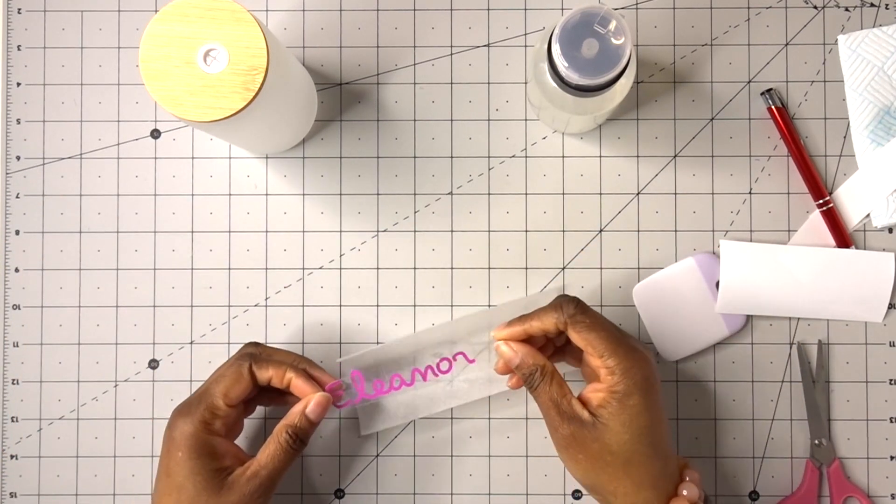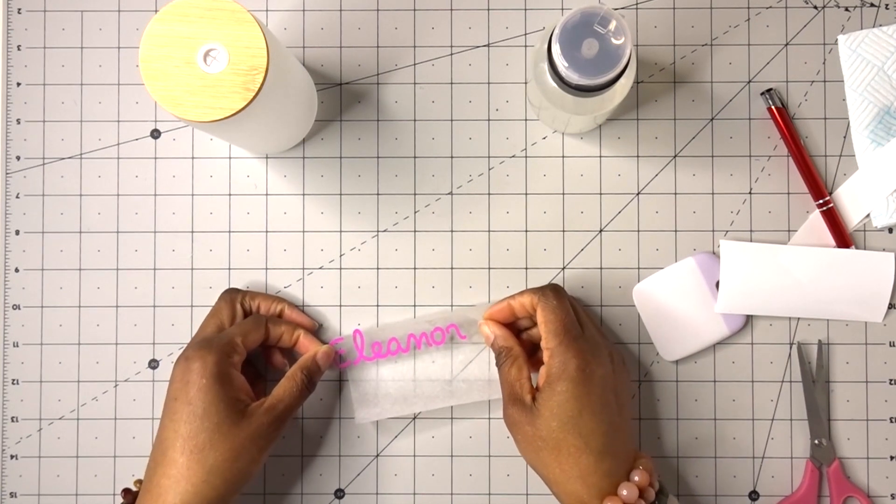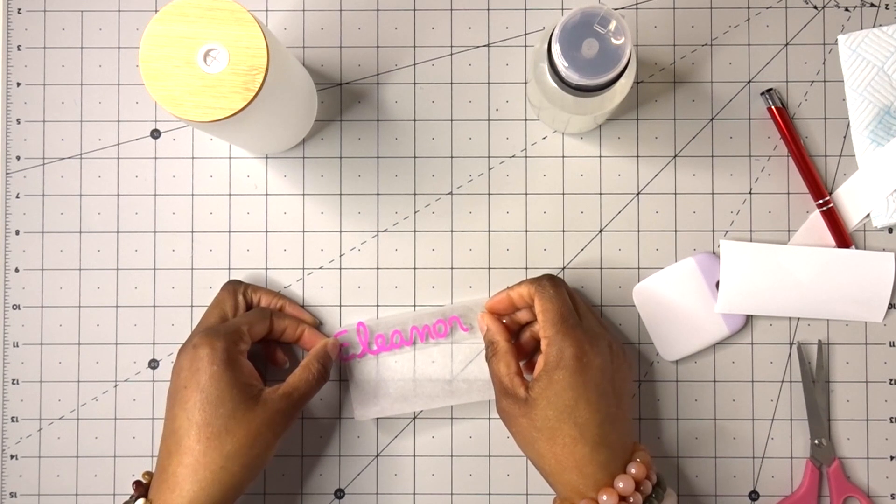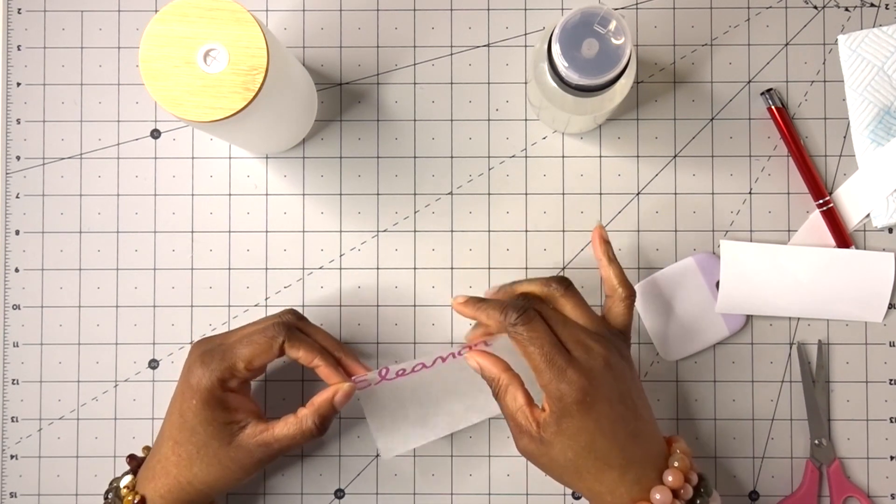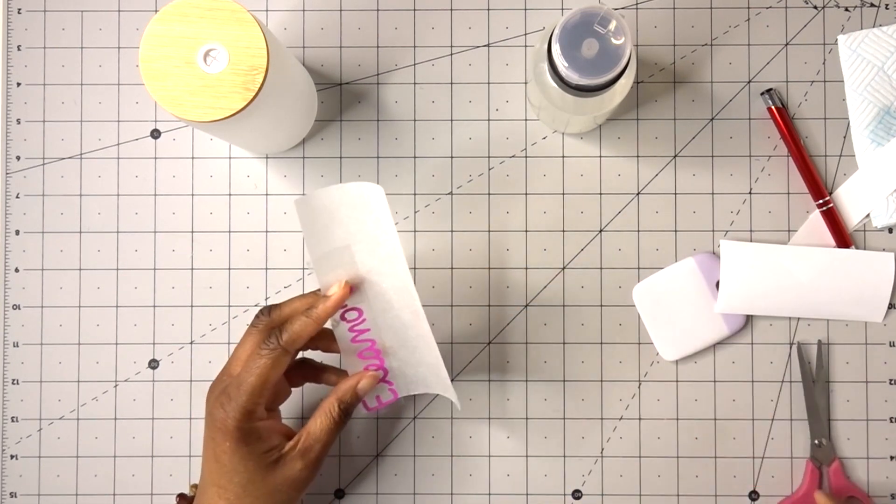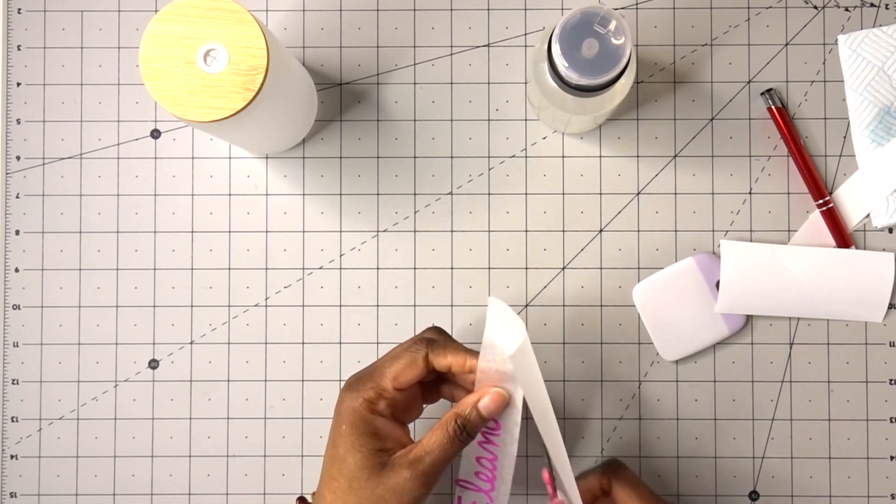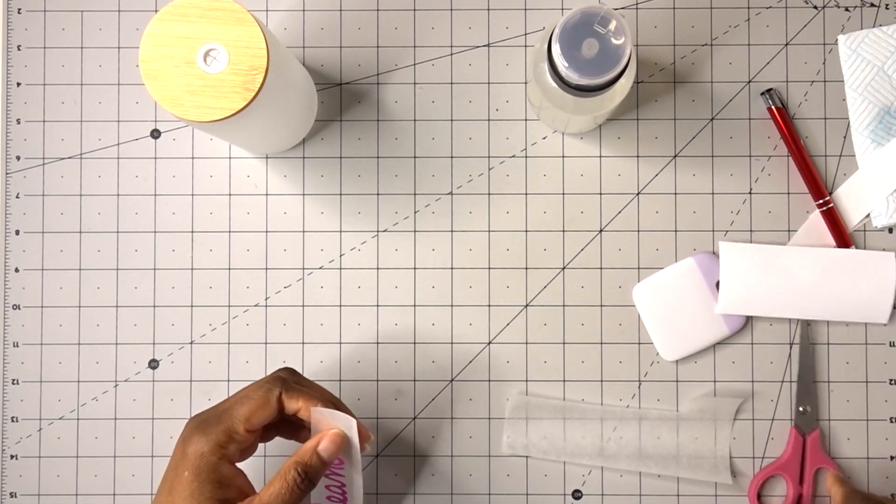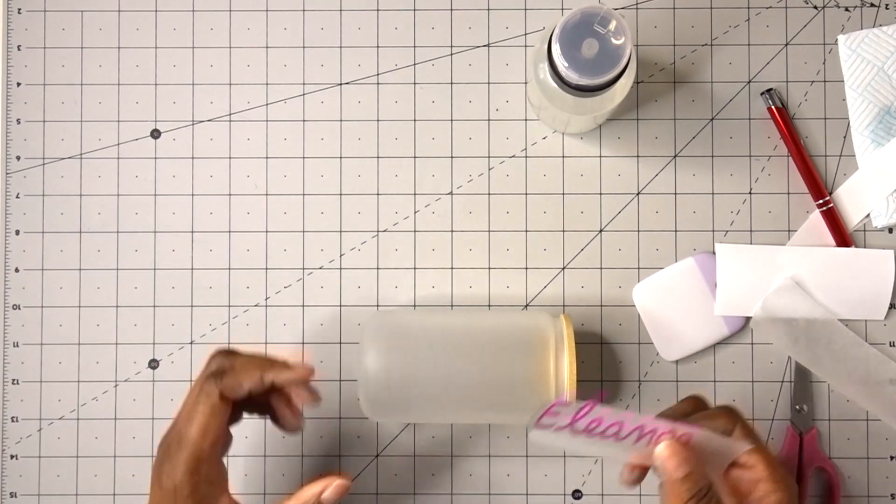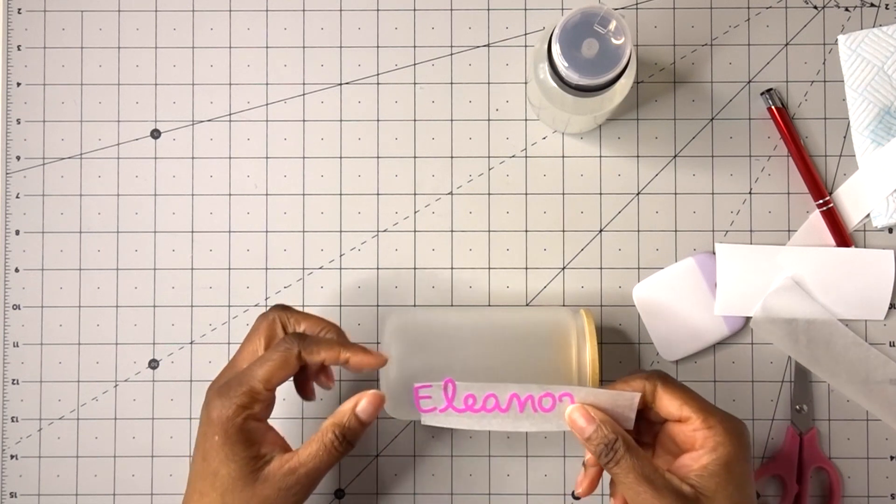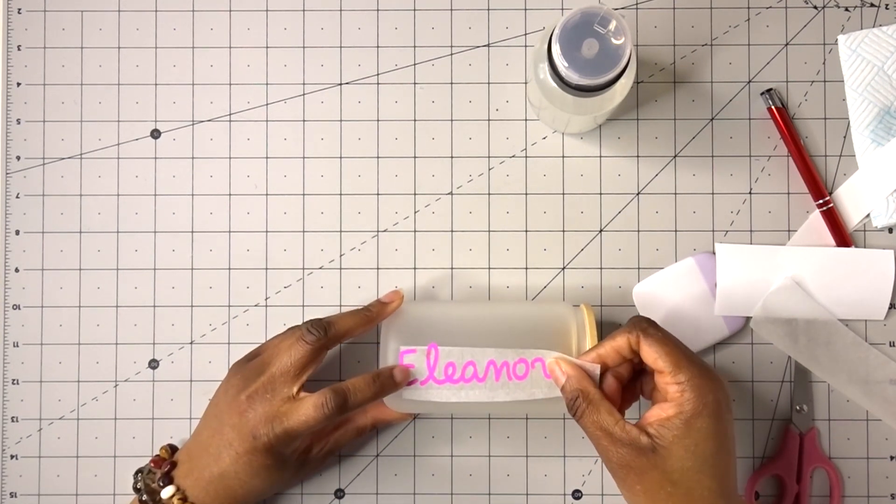So that's on there now, and I'm just going to place it. I have my glass here, hopefully it won't roll. I'm just going to line it up so it is straight. I'm going to make sure that this is burnished onto the glass really well.